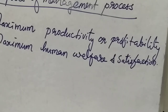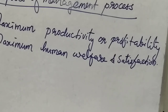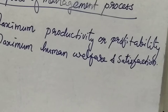The first purpose is maximum productivity or profitability — each and every management aims to maximize their productivity and profitability. The second one is maximum human welfare and satisfaction. It is necessary to satisfy human wants, and thereby they can provide maximum human welfare. These are the two purposes of management process.